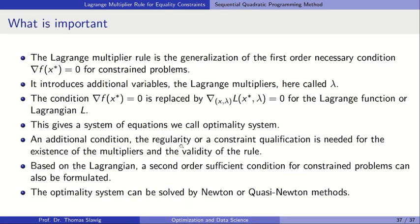In summary, the Lagrange multiplier rule is a generalization of the first order condition for constrained problems. We have additional variables — the Lagrange multipliers — and the necessary condition is gradient of the Lagrangian equal to zero. We have an optimality system that can be solved by Newton or quasi-Newton methods, and a second order optimality condition based on the Lagrangian.